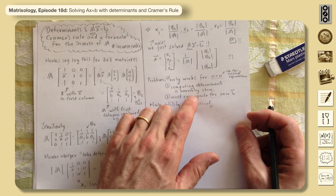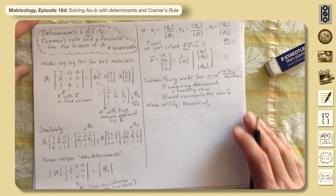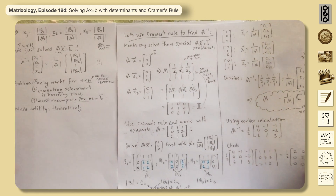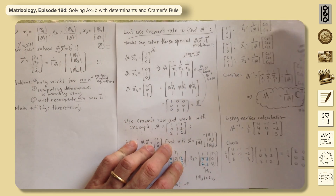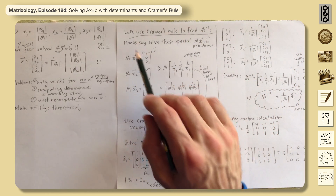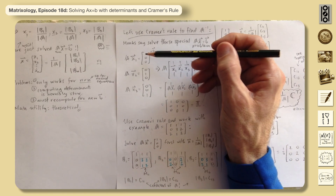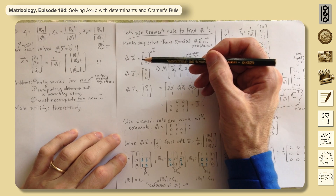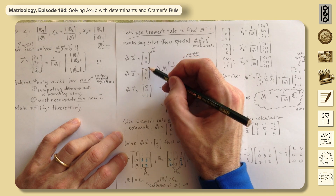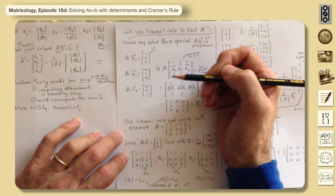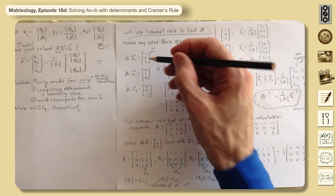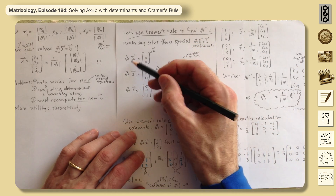This leads us to one other important result. The monks suggest: solve some very specific problems — namely Ax = b for the three special b vectors [1,0,0], [0,1,0], and [0,0,1], which are exactly the columns of the identity matrix — i-hat, j-hat, and k-hat.